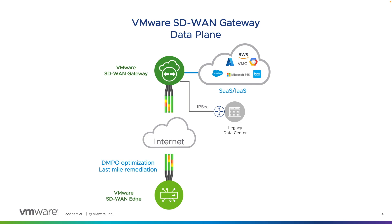For traffic going to Internet destinations, all other SD-WAN vendors use the split tunnel concept and dump it directly out to the Internet from the local edge, whereas VMware leverages these gateways — which are distributed globally — to make sure that even Internet-bound traffic is able to get the full DMPO benefit, leading to superior user experience for typical SaaS applications like Microsoft 365 and Salesforce, and really any SaaS-based applications that enterprises use.